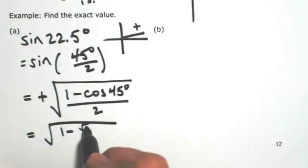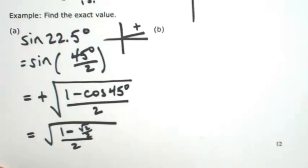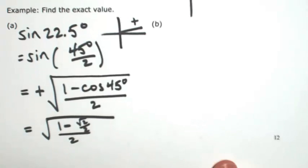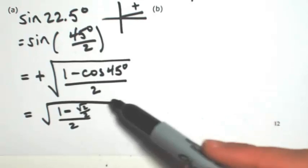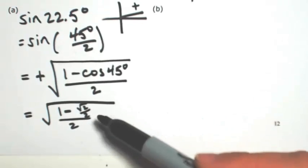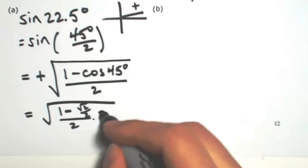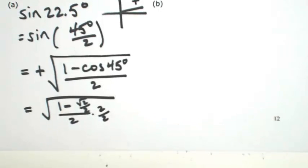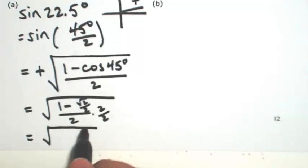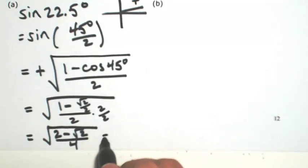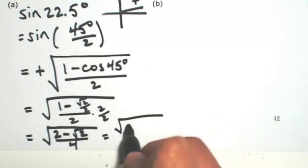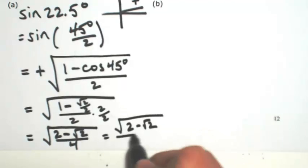We get 1 minus square root of 2 over 2, divided by 2. To clear the fraction in the numerator, multiply the top and bottom by 2, then distribute. So we get 2 minus the square root of 2, all over 4. Then taking the square root of top and bottom, we get the square root of 2 minus square root of 2, all over 2. Radicals within radicals are fine, by the way.